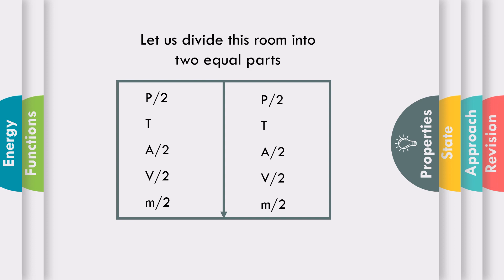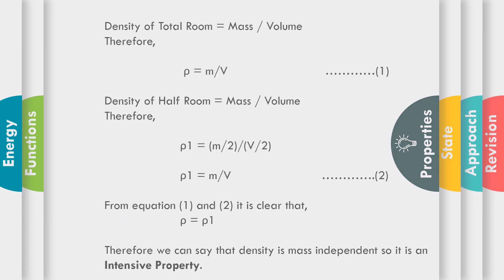Now, as we know, density is mass per unit volume. Let us calculate the density of the total room first. Density of total room: rho = m / V. Let us call this equation number 1.